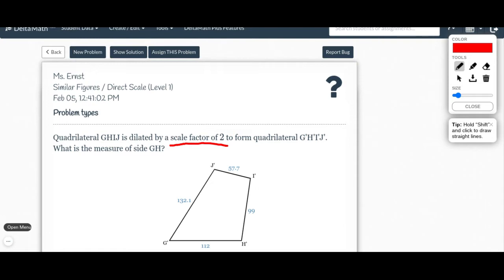So we need to note here that the image that we have, this is the one that's already been dilated. So it means we took a figure and we multiplied everything by two, and this was the result.